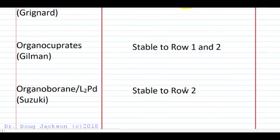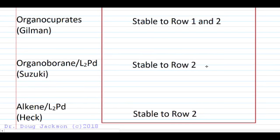For cuprates, they are remarkably stable to both sets of groups. They're stable to the acidic groups because the copper to carbon bond isn't very polar. And they're stable to the addition groups because the mechanistic pathway prefers the coupling to the halide, the substitution at the halide carbons. And so we're stable to both row one and row two.